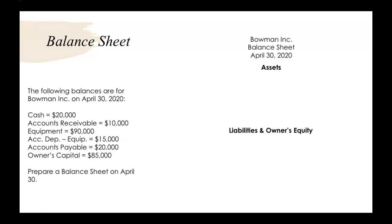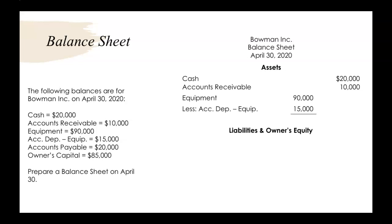Now we start listing out all of our assets, and again these have to be listed in order of liquidity. So cash — cash is already cash, that's always going to be your most liquid asset. Then accounts receivable, then our equipment. You'll notice the number for the equipment, that $90,000, went to the inside. Why is that? We have accumulated depreciation on that equipment — this contra asset account — which is going to decrease the book value of our equipment. So we subtract out that accumulated depreciation and then put the book value over on the far right, in line with our cash and accounts receivable amounts.